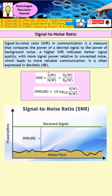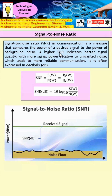SNR is signal power over noise power. In the ideal world, we want the signal to be as big as possible and the noise to be as small as possible. A big number divided by a small number gives a very large SNR. A higher SNR indicates better signal power compared to noise, which leads to more reliable communication.